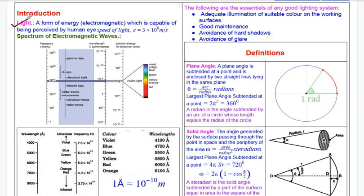Why is light a form of energy? There are various forms of energy: mechanical energy, electrical energy, and others. Light is a visible form of energy. Sound is also a form of energy, which is audible. We listen to sound and we see light — these are the perceptible forms of energy.